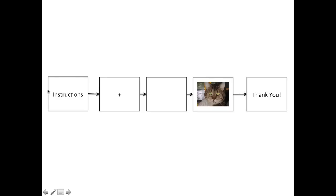We're going to start off by giving participants some instructions on how to complete the experiment. We'll then have the main experimental trial: a fixation cross for about 500 milliseconds, then a blank screen for 500 milliseconds, then the picture of the cat face which remains on screen until participants make their response — male or female. When the experiment's finished, we'll give the participant a thank you message.